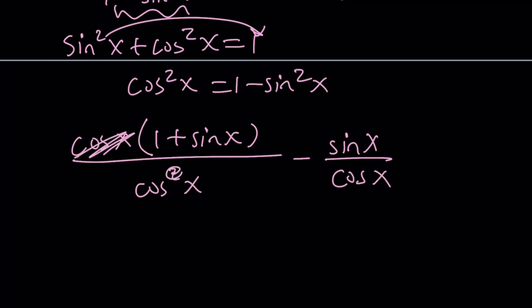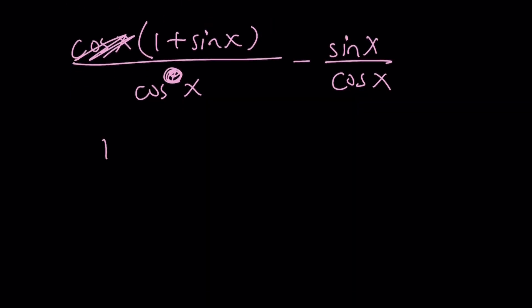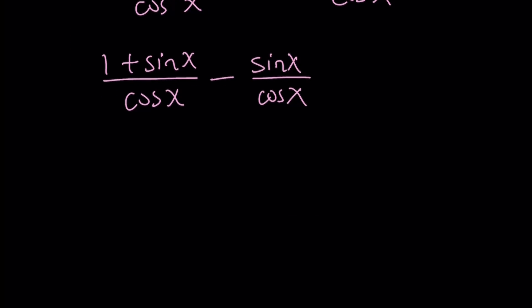Now, this cosine x and one of the cosine x will cancel out. We end up with 1 plus sine x over cosine x minus sine x over cosine x. Hopefully you see what I see. Now, these two fractions have the same denominator, so we can just subtract the numerators.